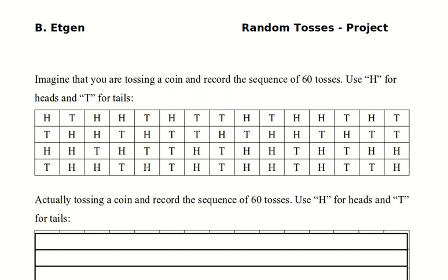So the first question asks you to imagine that you're tossing a coin and record the sequence of 60 tosses. So if you toss a head, then you'd write an H down. If you toss a tail, you'd write a T down. And the emphasis here is on the word imagine that you're tossing a coin.